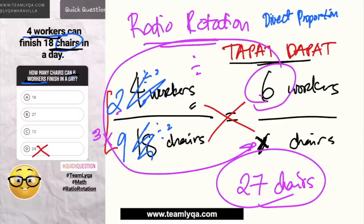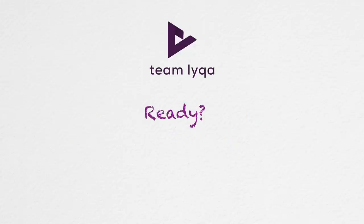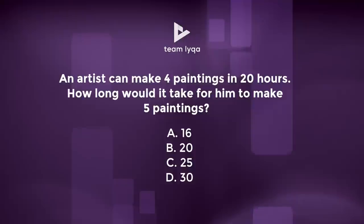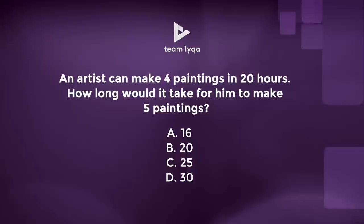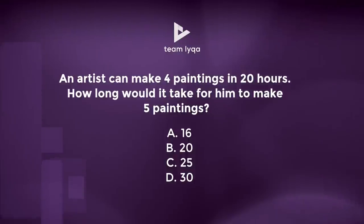So again, instead of looking for base or rate, or using cross multiplication, hopefully ratio rotation technique can help you. Anong takeaways natin dito? First of all, you have to determine using your common sense if it's a direct proportion or inverse proportion. Next, kung merong fraction form, as much as possible lalo na kung mahirap mag-divide, make sure that you put it in lowest terms muna, and then you can use ratio rotation — and that's it. You're going to get to the answer.